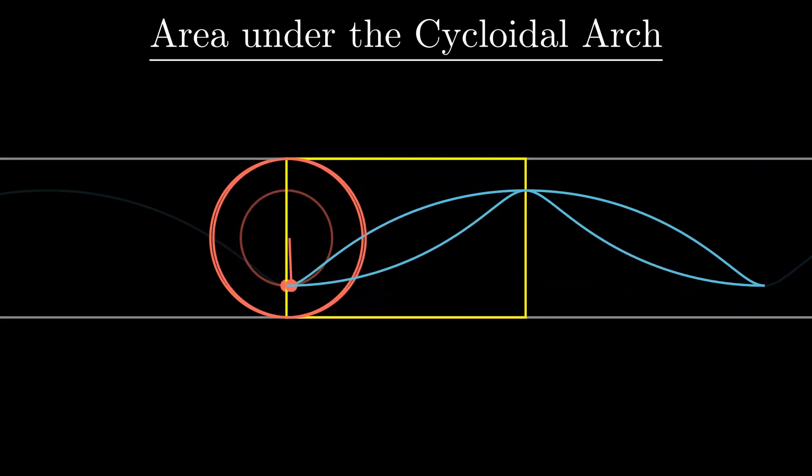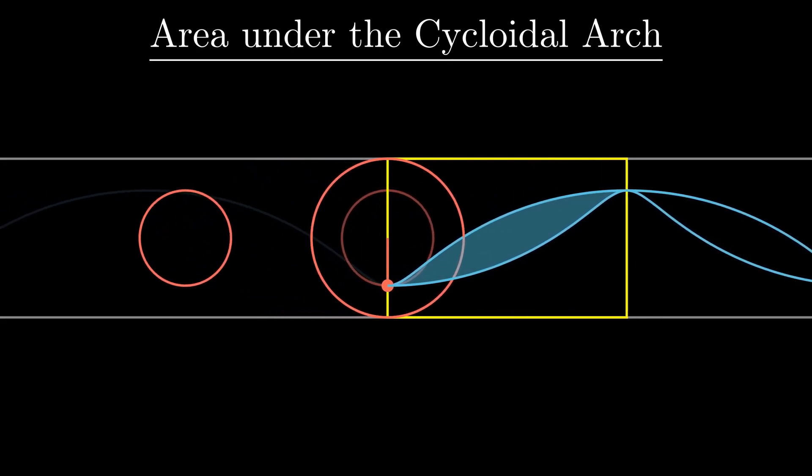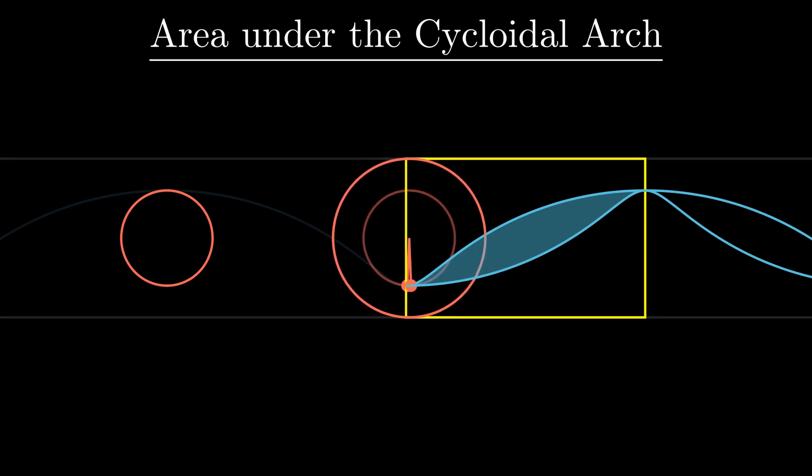The region between these two cycloids is the key in finding the area we want. We will use Cavalieri's principle to find the area of this region. Consider the generating circle rolling simultaneously in both clockwise and counterclockwise directions. The angle through which the circle would have rotated is the same in both cases at any given instant.